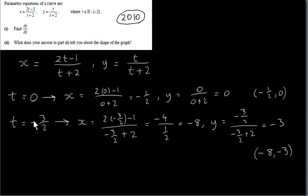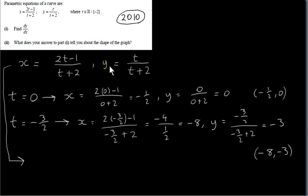We could pick any real number for t except minus 2 and build up points on the curve. Both x and y are expressed in terms of a single parameter t. However, we could eliminate t to get back to the Cartesian form of the equation — just y in terms of x.